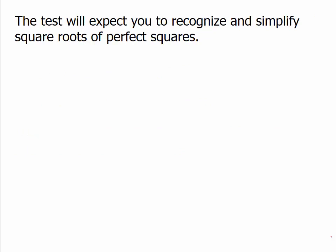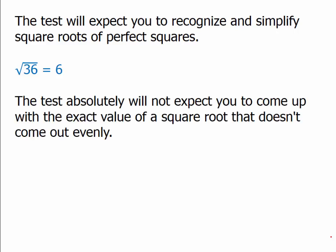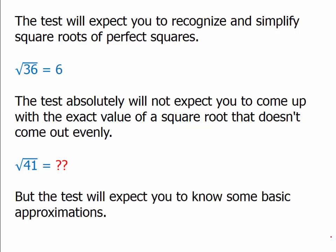The test will expect you to recognize and simplify square roots of perfect squares. For example, if it gives you the square root of 36, it's going to expect you to know that equals 6. But the test will not expect you to compute the exact value of a square root that doesn't come out evenly. So if square root of 41 shows up, nobody expects you to do that in your head. However, the test will expect you to know some basic approximations — often it's interested in your ability to approximate rather than the exact decimal value.